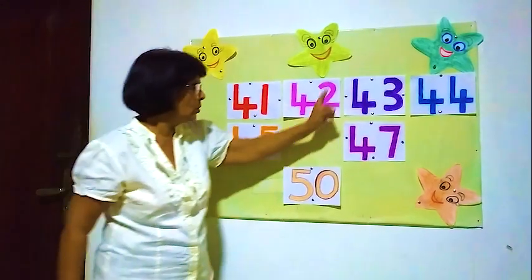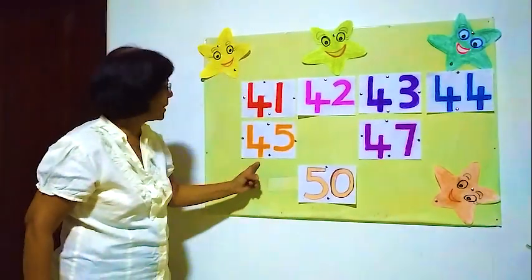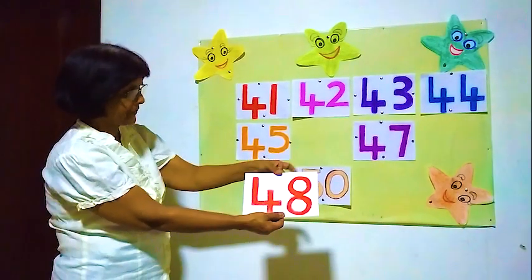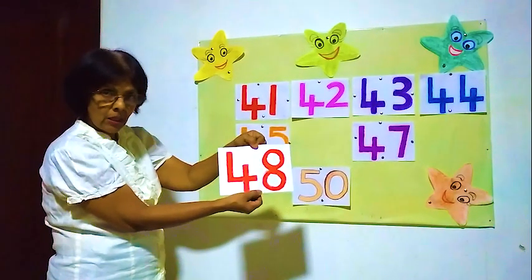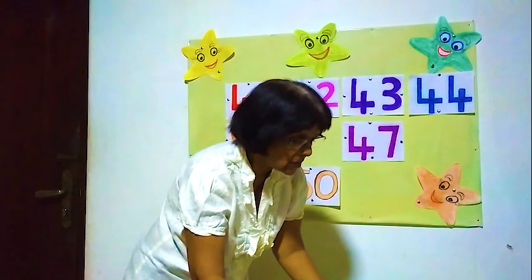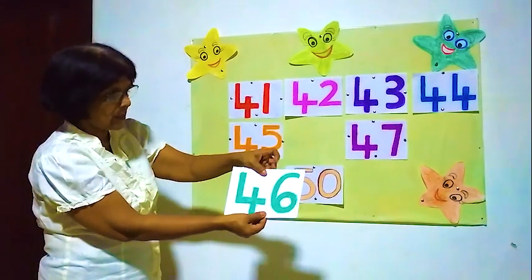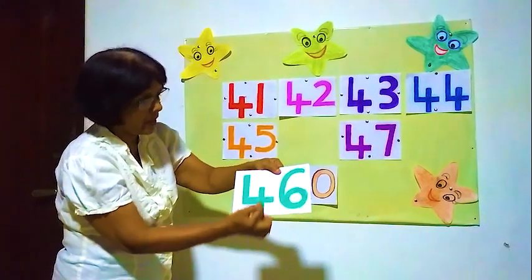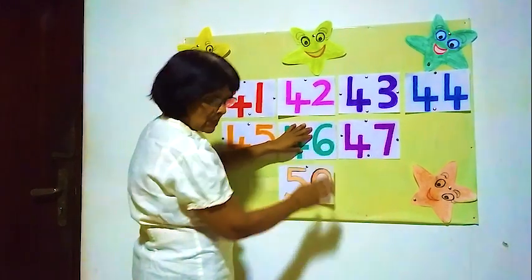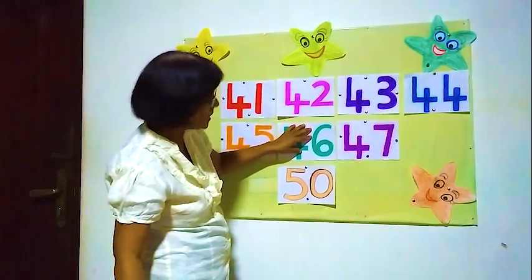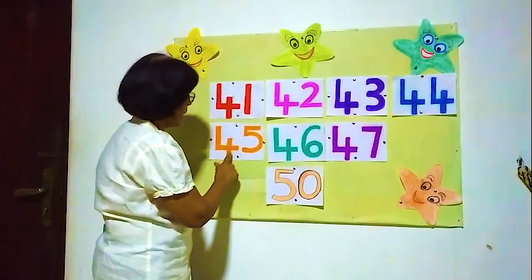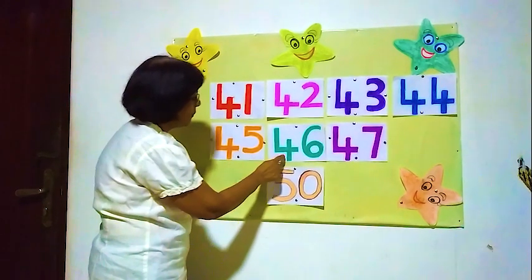41, 42, 43, 44, 45, 46. Is this 46? No, this is 48 — wrong. What about this one — is this 46? Yes! This is 4 and 6, so 46. We'll put it here. 46.